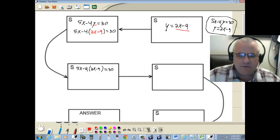Now, the first thing I'm going to do is use the distributive property. And I'll put it over here. So we've got 5x. Negative 4 times 2x is negative 8x. Negative 4 times negative 9 is a positive 36. Equals 30.